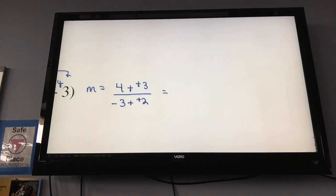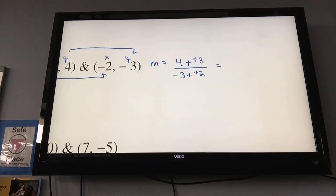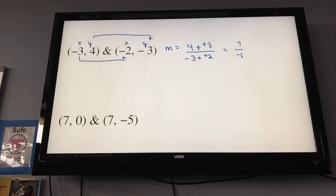So, then I have 4 plus 3, 7, negative 3, plus 2, negative 1. And would you make that 1 positive or just keep it? Nope. You just keep it with it.